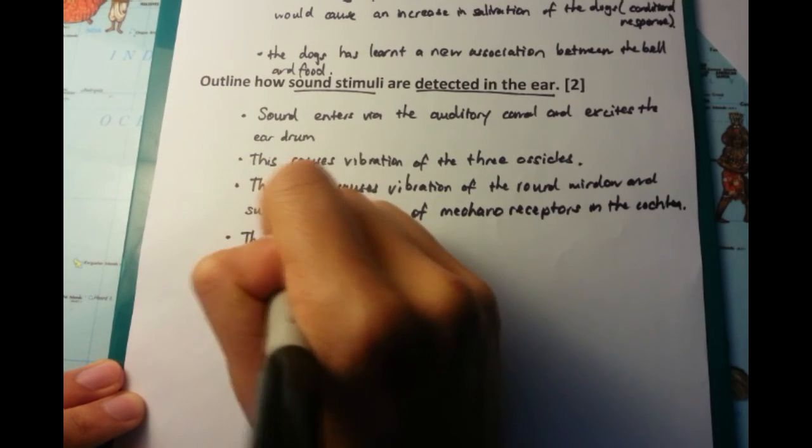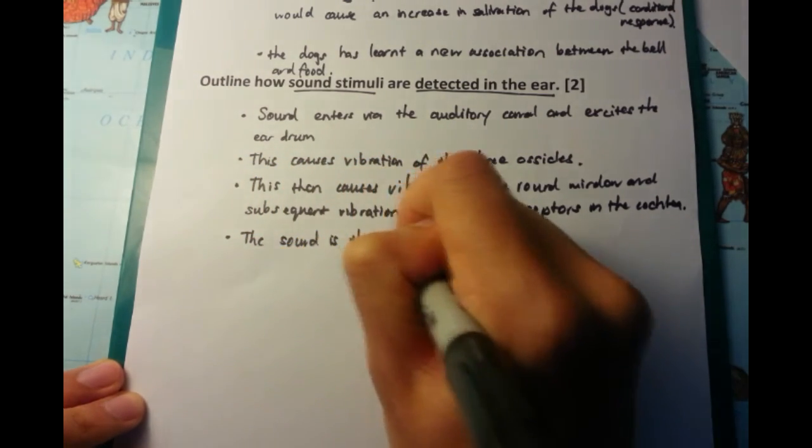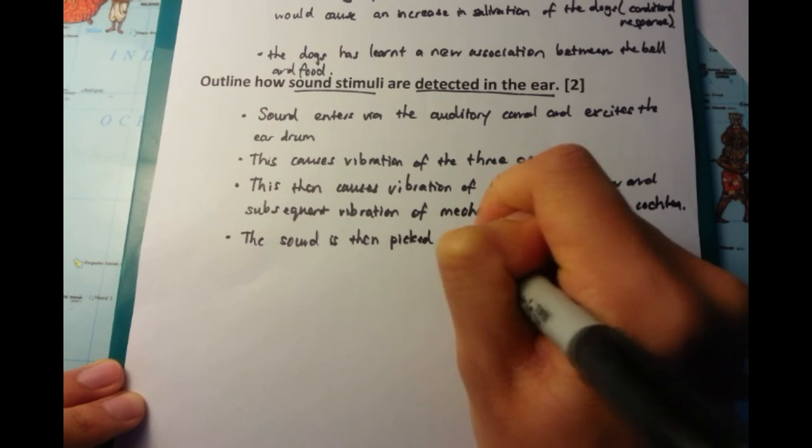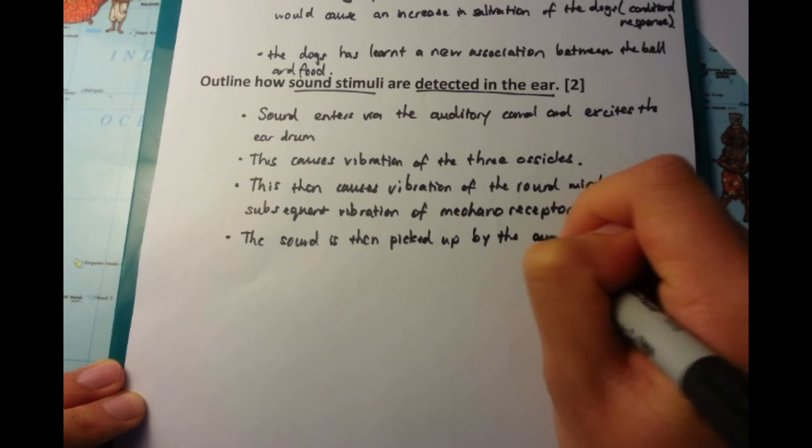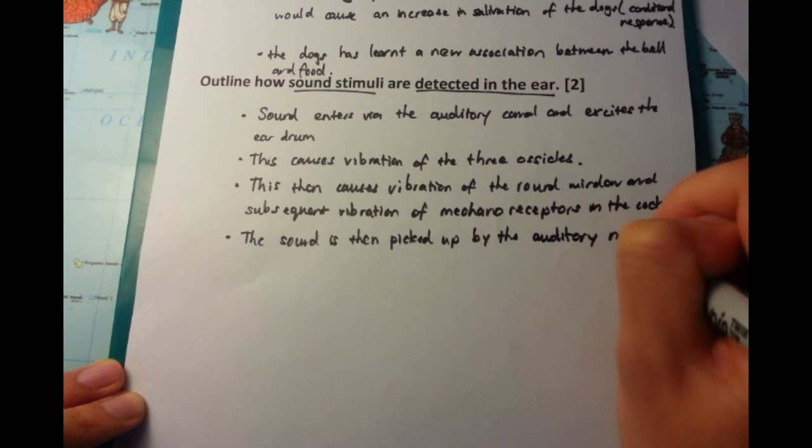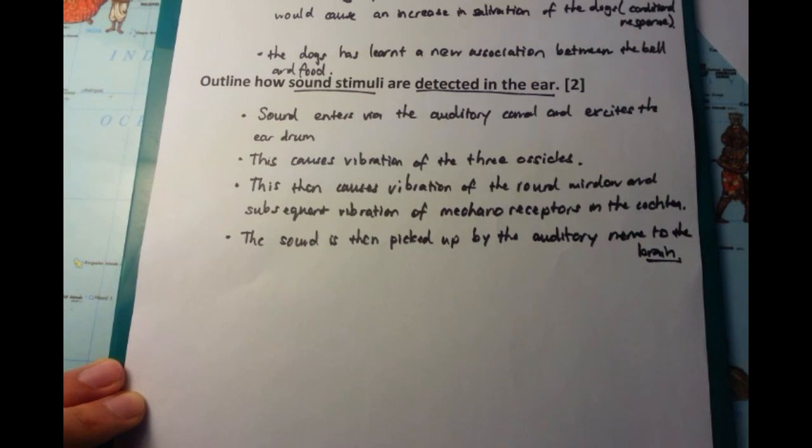Once you have this excitation, that generates action potentials. Action potentials being the moving of sodium in and potassium out and vice versa. And then this is picked up by the auditory nerve which gets processed to the brain. This is what happens.